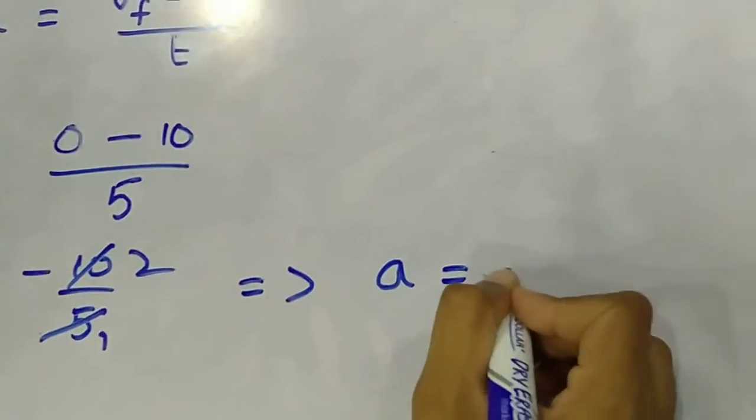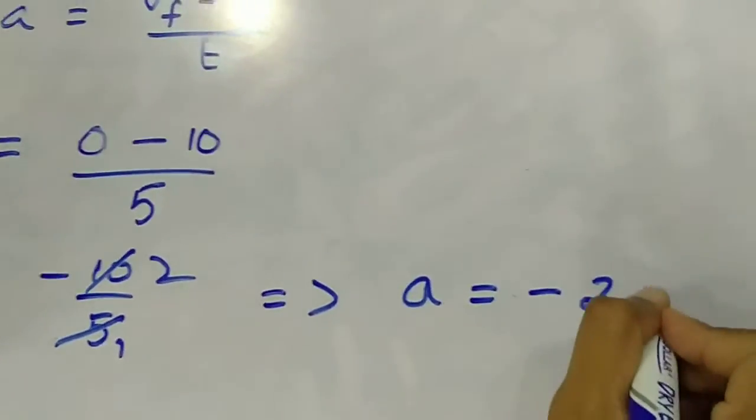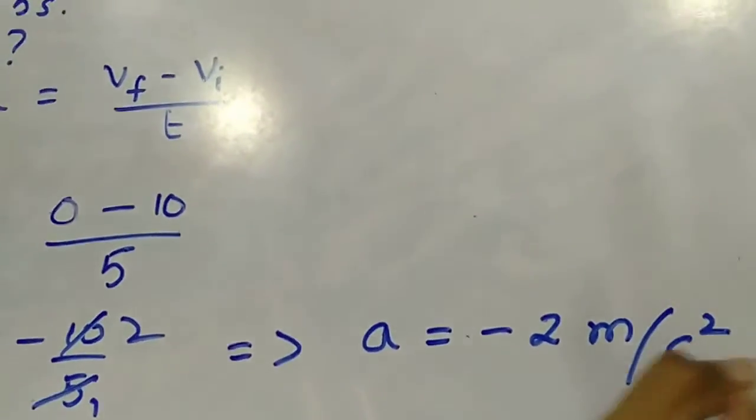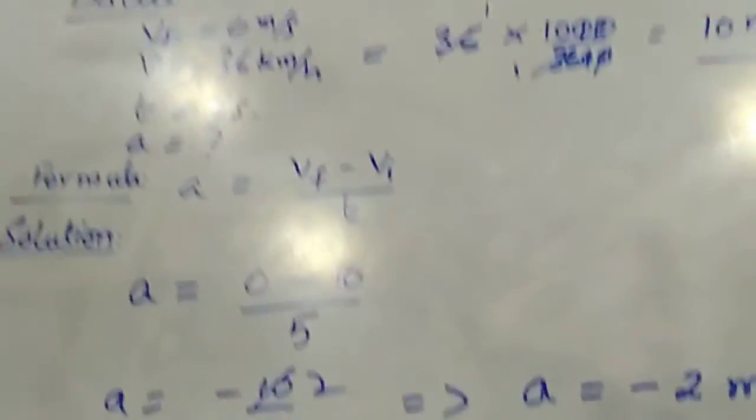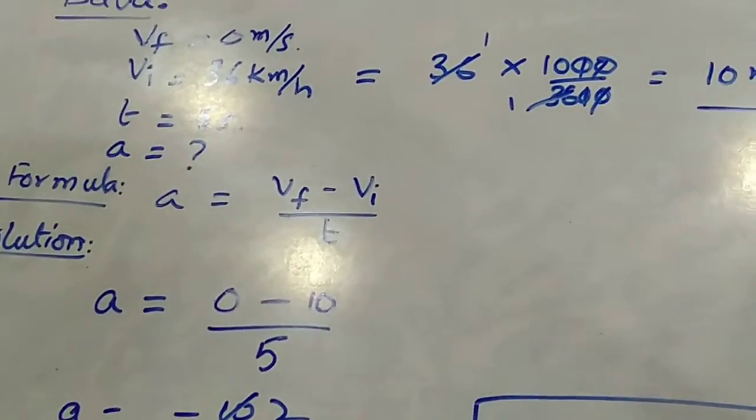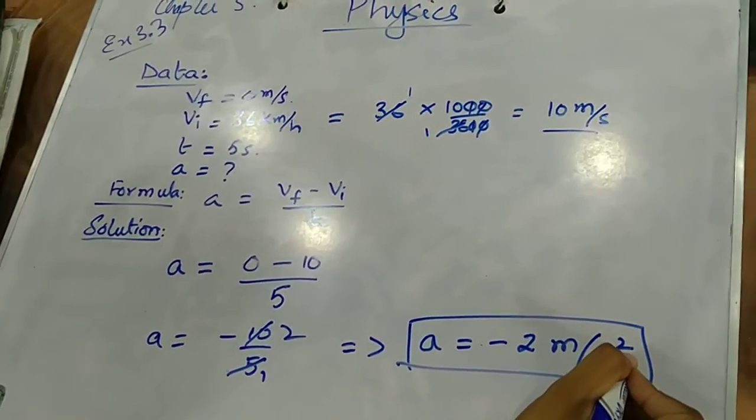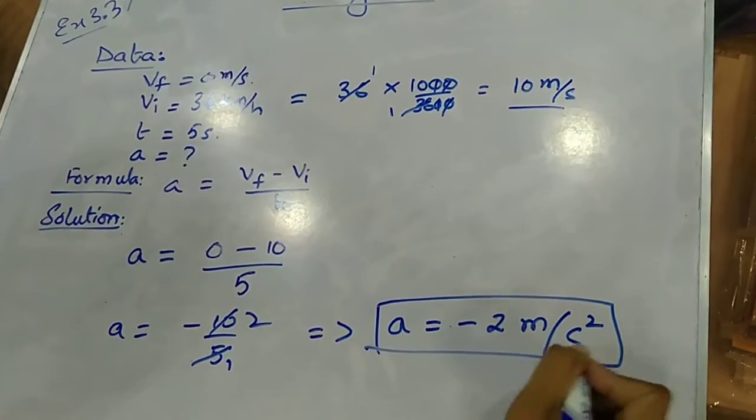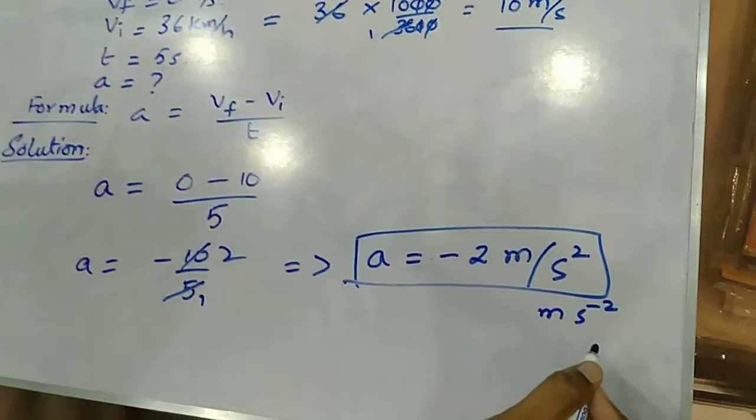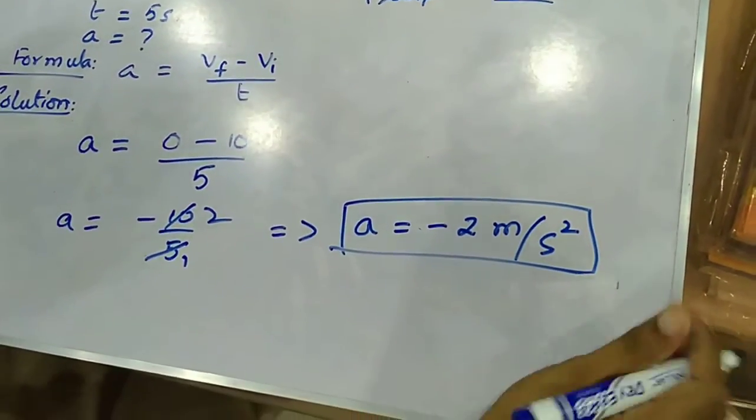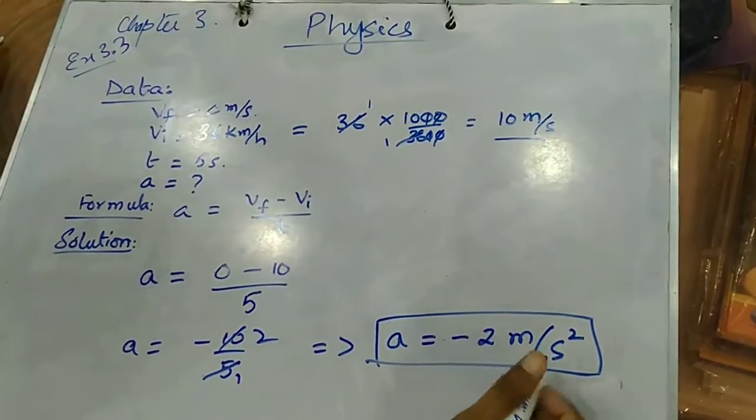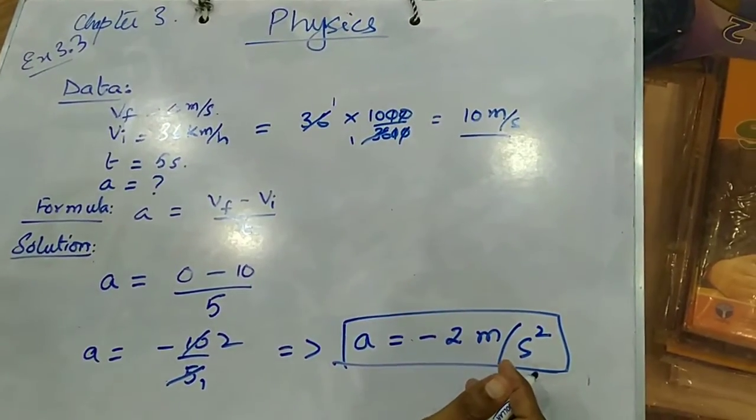So deceleration is minus 2 meters per second squared. You should remember that the standard unit of acceleration is meters per second squared. This meters per second squared is equal to ms⁻². Okay, understood? So this is our answer: deceleration equals minus 2 meters per second squared.